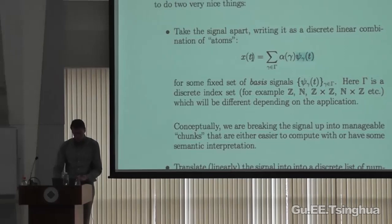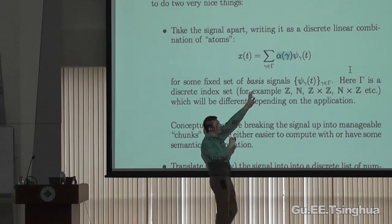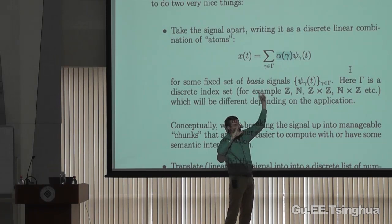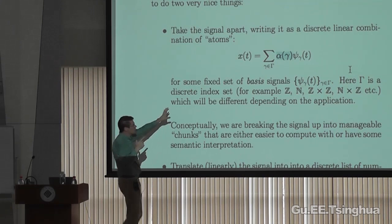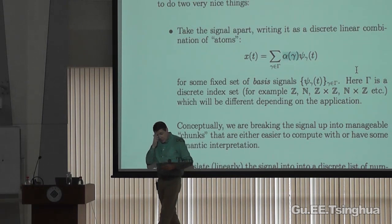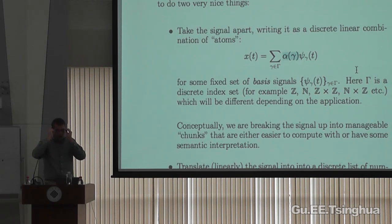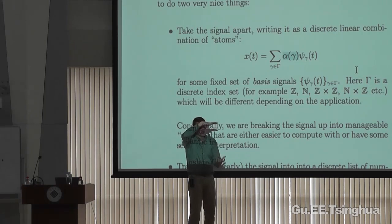If ψ_γ is a basis, then for whatever space of signals x(t) we're interested in, each signal x(t) has a unique set of expansion coefficients — no other signal has that same set, and every set of coefficients specifies a different signal. This is just a broad generalization of basic concepts of linear algebra, where you can think of these basis functions as columns of a matrix. More generally, they can just be fixed signals that you take different linear combinations of.